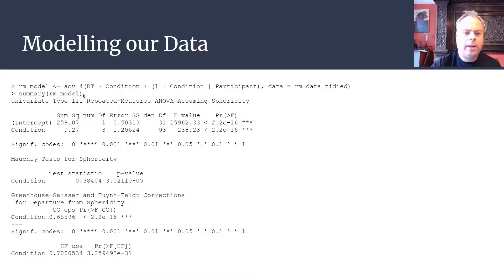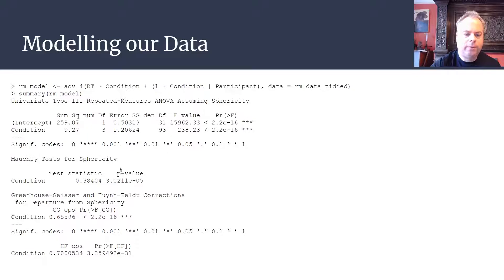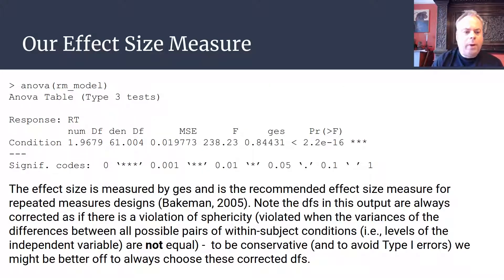We specify the repeated measures factors in the random effects term; otherwise the rest is the same. The output gives us Type 3 sums of squares, and we get an F value associated with our experimental condition of 238, with an absolutely minuscule p-value. We also get some additional tests including Mauchly's test of sphericity, which is important — when sphericity is violated you have to use corrected degrees of freedom. In this case Mauchly's test is significant, so we need to be careful when reporting the results.